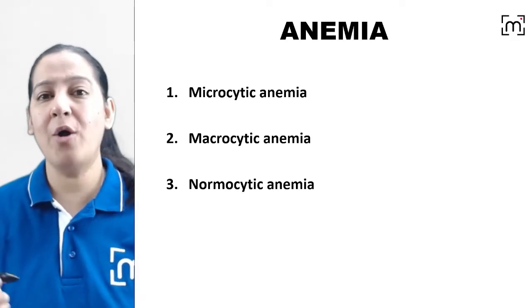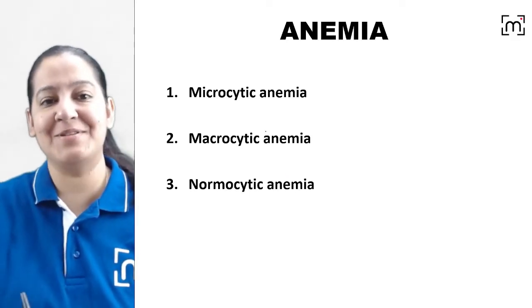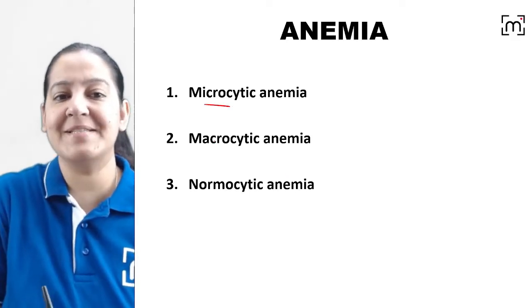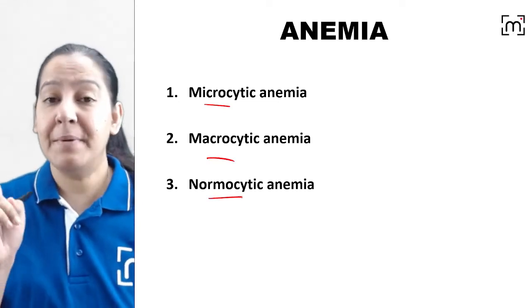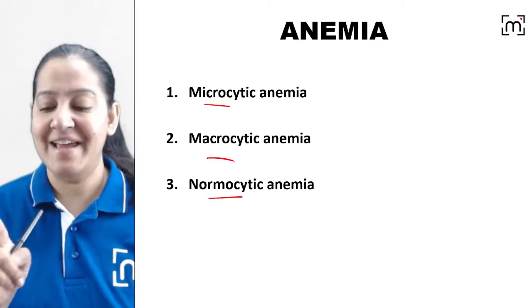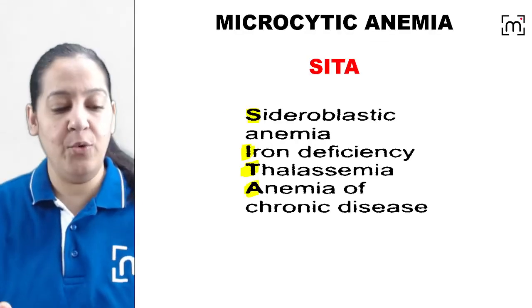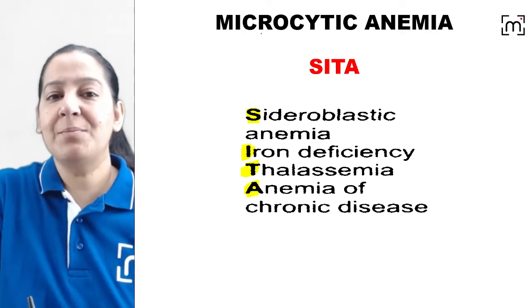Hello everyone. We all know that morphologically there are 3 types of anemia: microcytic, macrocytic, and normocytic. But do you know the examples in each category? Let me help you with the mnemonics in each category.